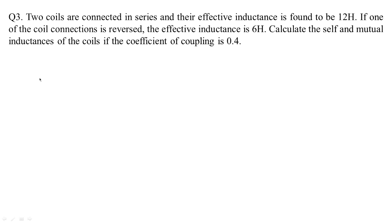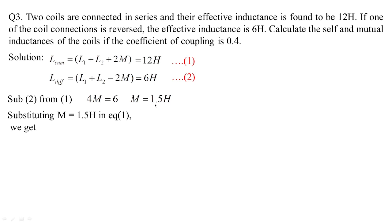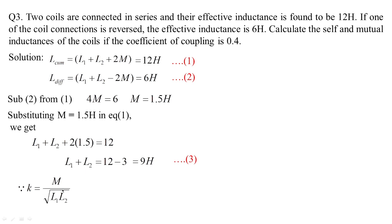Next problem: two coils are connected in series and their effective inductance is 12 H. If one coil's connections are reversed the effective inductance is 6 H. We need to find self inductances and mutual inductance if the coefficient of coupling is 0.4. The cumulative value is 12 H and differential is 6 H. Subtracting gives M = 1.5 H. Substituting back, L1 + L2 = 9 H. Since K = M / √(L1·L2), we get L1·L2 = M² / K² = 5.625.